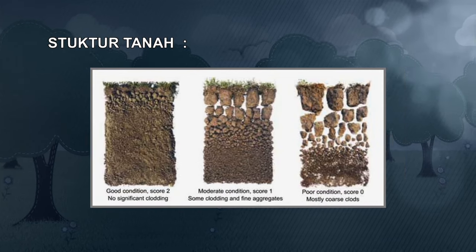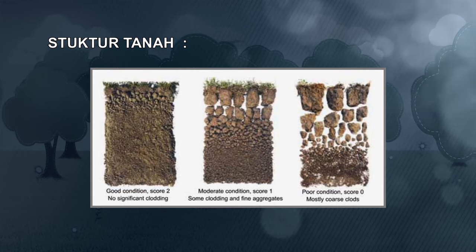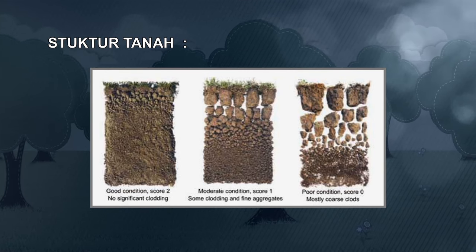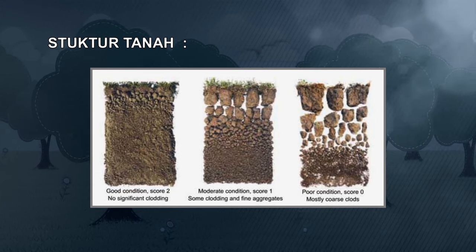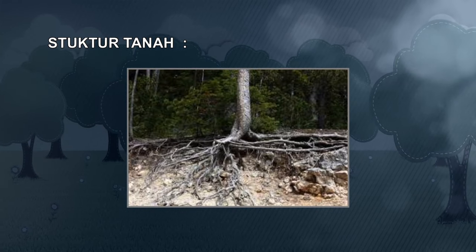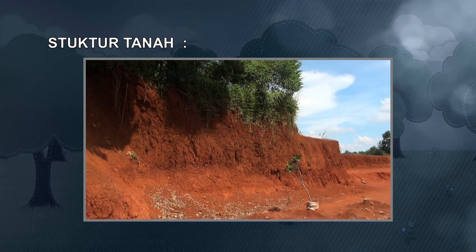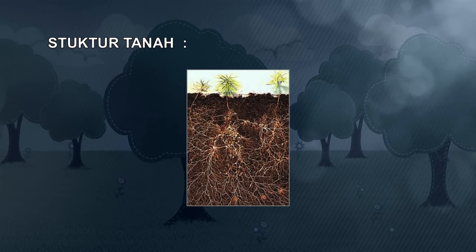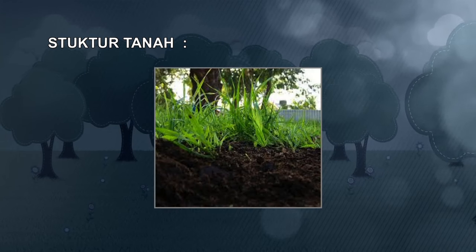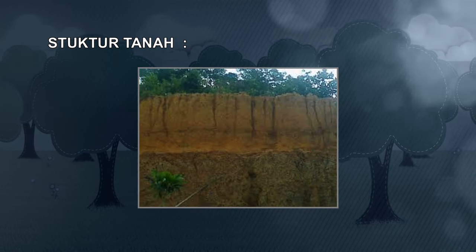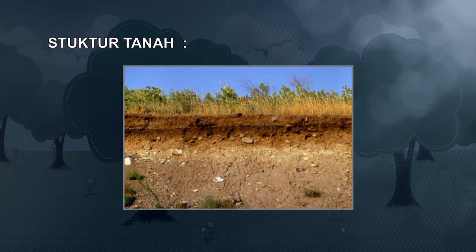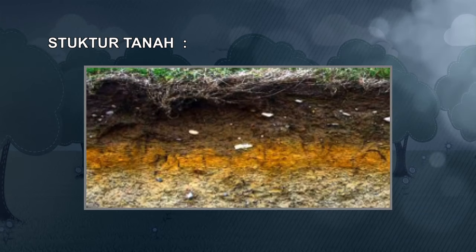Tanah tersusun atas bahan induk, udara, air, mineral, dan senyawa organik. Bahan induk mengalami pelapukan karena adanya dinamika aktivitas organisme, yaitu hewan dan tumbuhan termasuk mikroorganisme. Selain itu, pelapukan dipengaruhi pula oleh iklim dan zat-zat terlarut, relief permukaan bumi, topografi, serta berjalannya waktu. Proses pelapukan terutama terjadi di permukaan tanah, sehingga terbentuklah lapisan-lapisan tanah dengan kesuburan dan struktur yang berbeda.